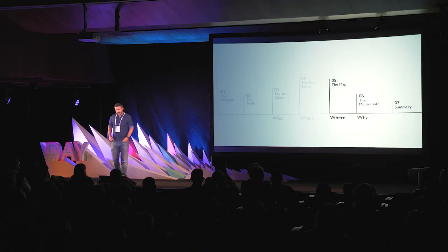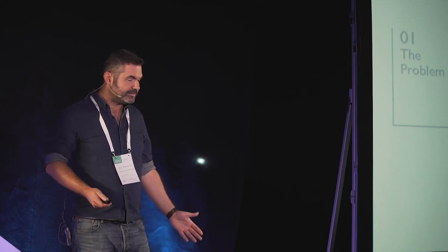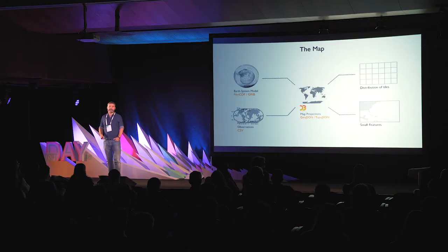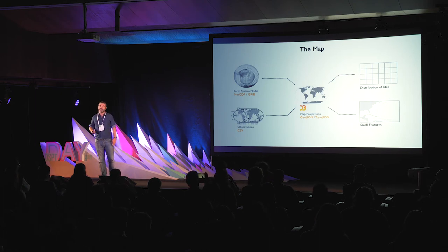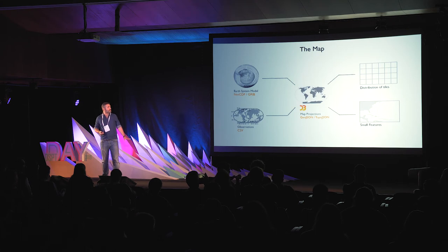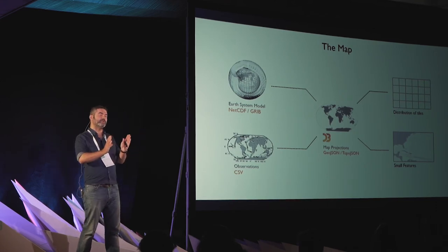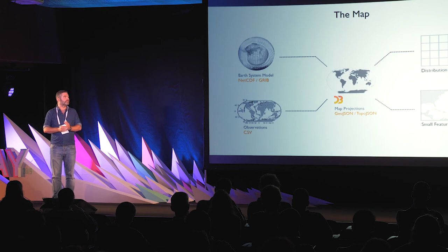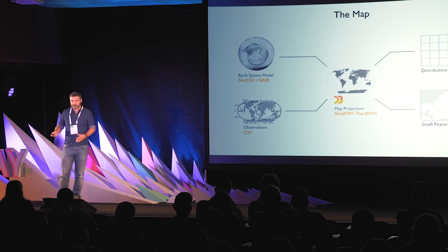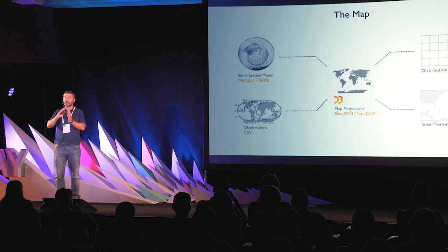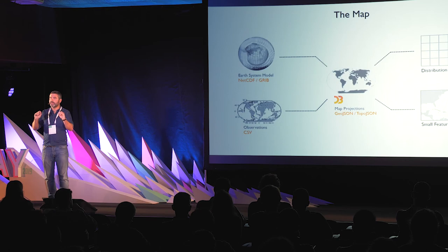Now, the map. Cartography is a huge topic in itself. What I would like to display is just the capabilities of D3 for doing maps in this context. I differentiate between output from an Earth system model — where you have to display something covering the entire planet and distribute tiles — and just displaying small features in a particular location without covering the full Earth.